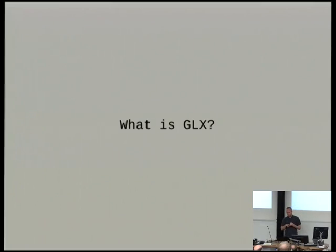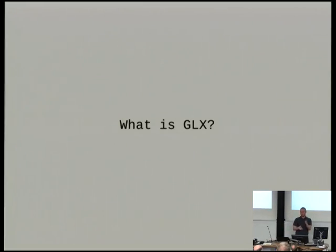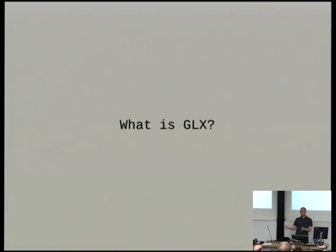X has a concept of visuals, which Windows calls pixel formats, which basically specify eight bits per channel of red, green, and blue, and whether alpha is present. GLX extends this concept to include: is there a back buffer or not? Is there an accumulation buffer? Are there depth buffers, and if so, how many bits do you get in each?